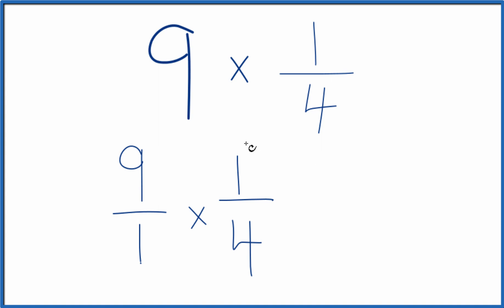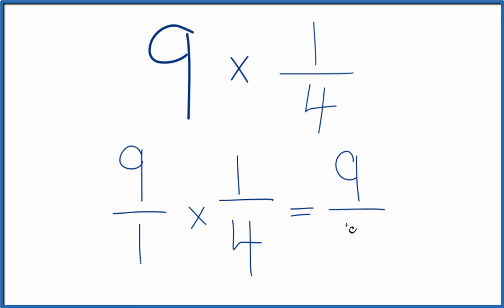When we multiply fractions, we multiply the numerators, then the denominators. So 9 times 1 is 9, and 1 times 4 is 4. So 9 times 1 fourth equals 9 fourths.